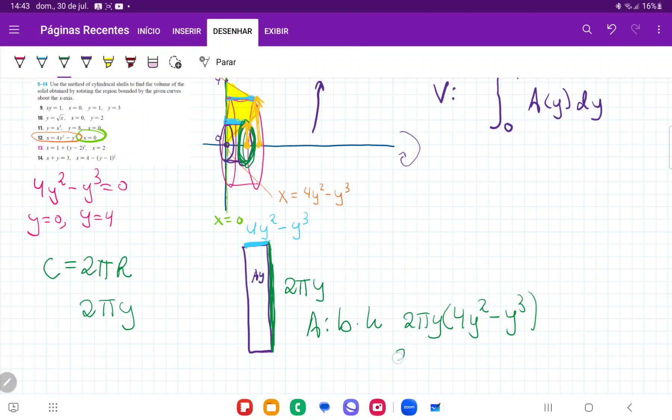Therefore I have an expression of y, right? So I'm just going to leave this 2 pi outside because it's a constant and distribute this y. So that gives me 4 y cubed minus y to the power of 4. And this is my expression for my area, right?